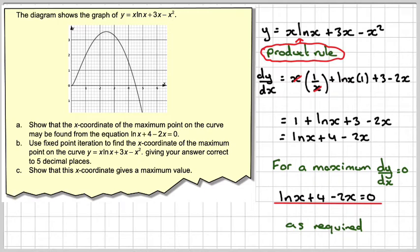So we're going to have to use fixed point iteration. We have to use the graph to get a value from the graph. So we're going to take 2.4, that seems very close to the maximum point as x0.